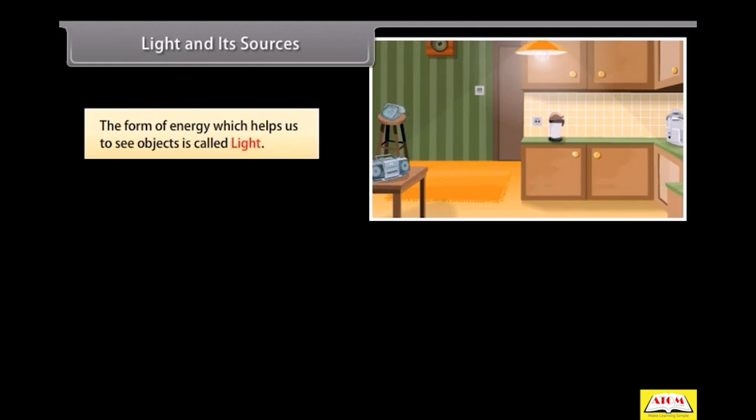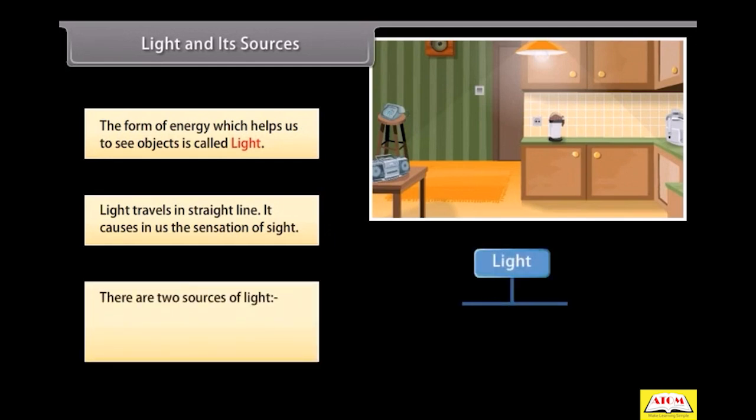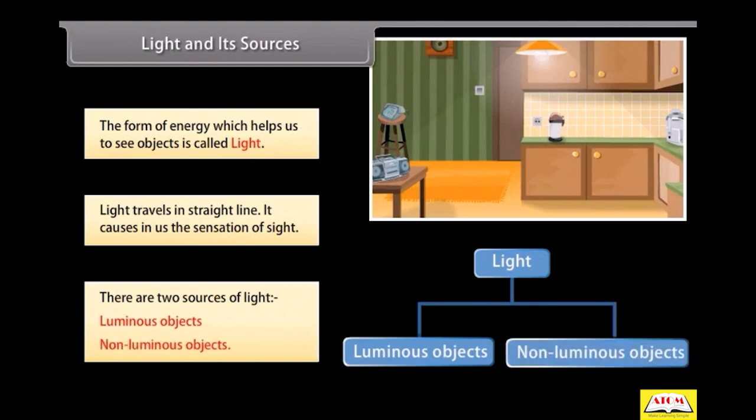Light and its sources. The form of energy which helps us to see objects is called light. Light travels in straight lines. It causes in us the sensation of sight. There are two sources of light: luminous objects and non-luminous objects.